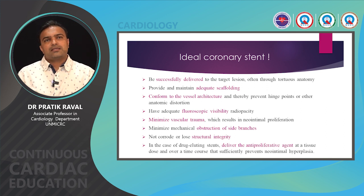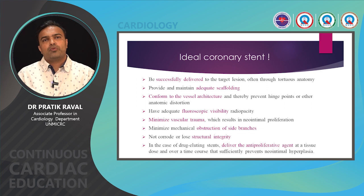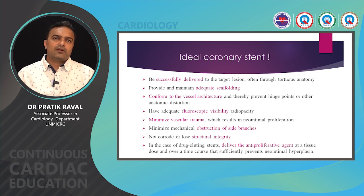BMS had many limitations, ranging from stent embolization and migration to high rates of restenosis. This raises the question: what should be the characteristics of an ideal coronary stent? It should have good flexibility for delivery through tortuous anatomy, provide adequate scaffolding and conform to vessel architecture, have adequate fluoroscopic visibility, minimize vascular trauma and side branch obstruction, maintain structural integrity over time, and in the case of drug eluting stents, deliver anti-proliferative agents at a dose and over a time course that sufficiently prevents neointimal hyperplasia.